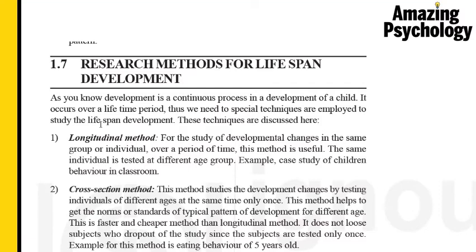Let's take a look at the different types of methodologies used in research. The first is the longitudinal method. The textbook states it is used for the study of developmental changes in the same group or within an individual over a period of time, and the same individual is tested at different age groups. For example, a case study done on child behavior within the classroom.